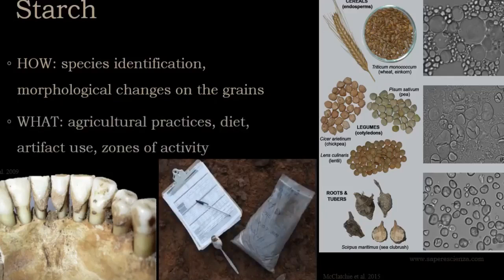So what can we say based on the analysis of starch grains? We can discuss agricultural practices, diets of past societies, and — if we study the artifacts and traces of their use — also zones of activity in houses or in settlements.